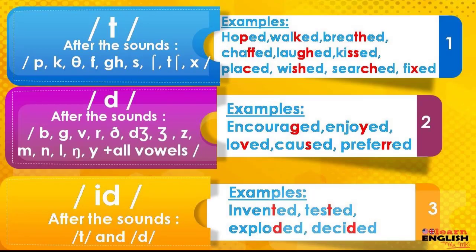Final ED is pronounced in three ways: either /t/, /d/, or /id/. When do we pronounce ED as /t/? We pronounce ED as /t/ after the sounds: Let's focus on the pronunciation of each transcription. /p/, /k/, /f/, /θ/, /s/, /ʃ/, /tʃ/, /x/.